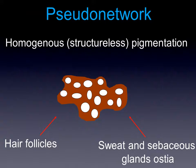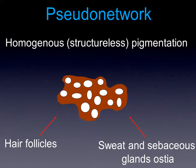This special anatomy is important to understand the so-called pseudonetwork. The pseudonetwork consists of a homogeneous pigmentation, and in this pigmentation we have some holes. These holes correspond to the hair follicles and the sweat and sebaceous gland ostia. We find this pseudonetwork in pigmented lesions of the face.